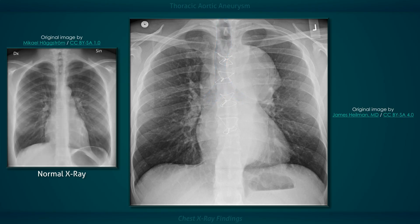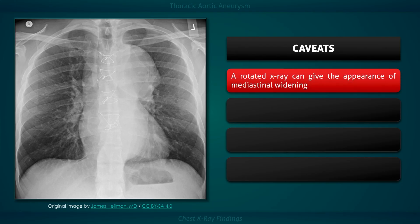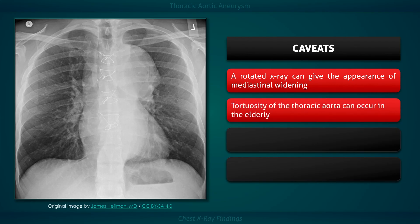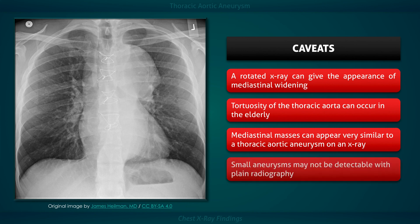When considering the possibility of a thoracic aortic aneurysm, you should keep in mind a few caveats. A rotated x-ray can give the appearance of mediastinal widening. The aorta can be quite tortuous in the elderly. Mediastinal masses such as a thymic tumor can appear very similar. And small aneurysms may not be detectable with plain radiography.